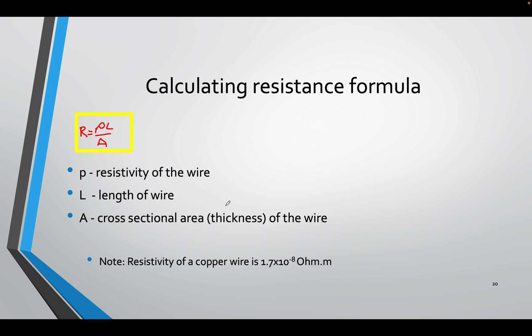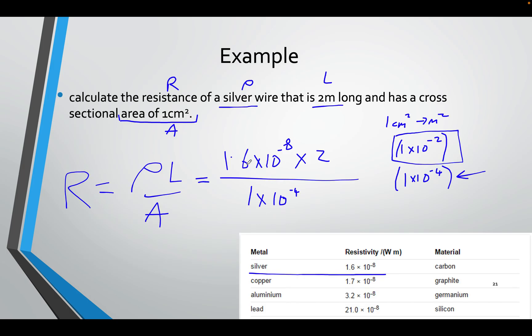Area can sometimes be found by using π R squared, if it is a circle. Usually it's a circular wire.